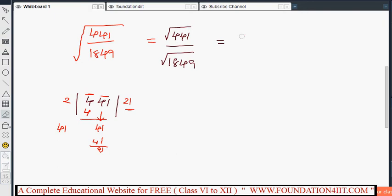Square root of 441 is 21. Similarly, square root of 1849, so we can use 1849 using division method.